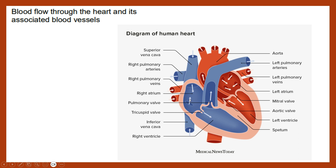Blood comes back from the body tissues at the same time it comes back from the lungs. Blood will then move from the atria down into the ventricles below — from the right atrium into the right ventricle, and from the left atrium down into the left ventricle — again, happening simultaneously.